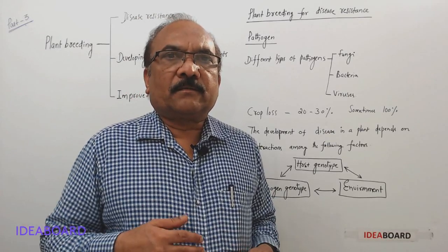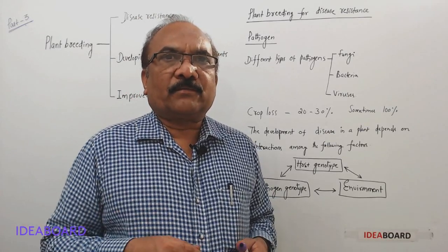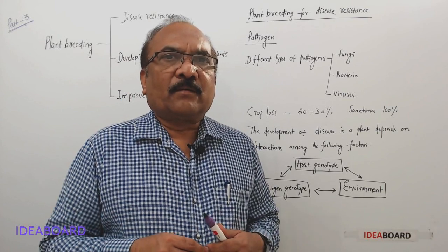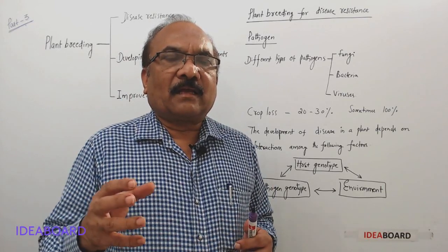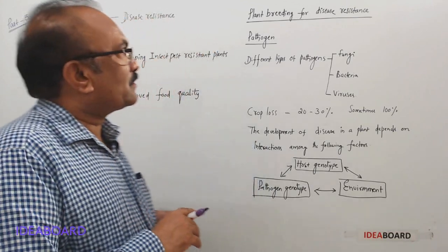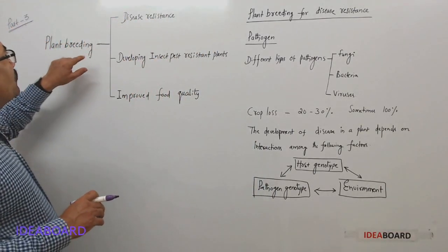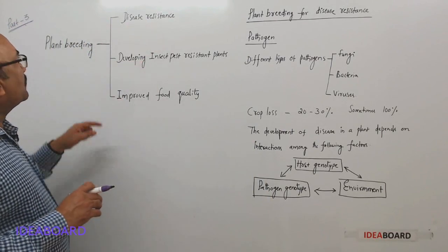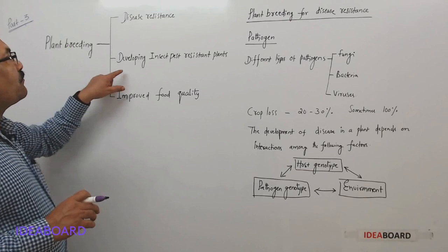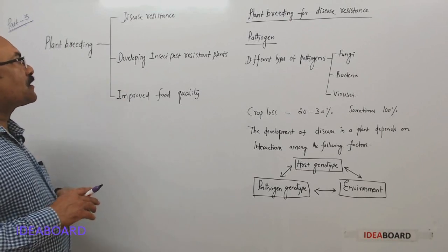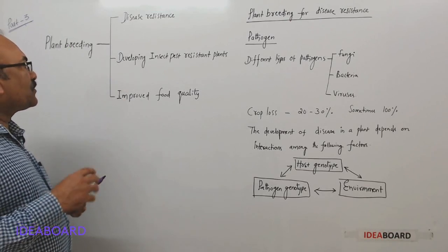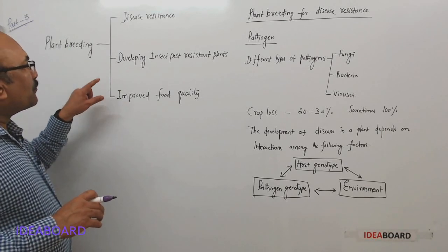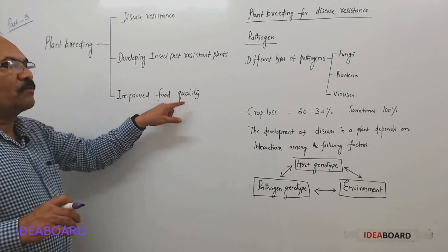Hello students. In this video, we will discuss the different types of breeding. That is, plant breeding for disease resistance. The second one is plant breeding for developing insect pest resistant plants, and plant breeding for developing plants with improved food quality.